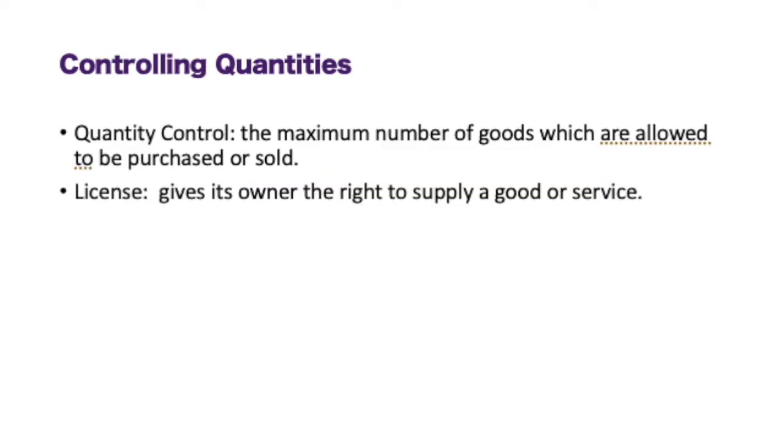So quantity controls, this is the maximum number of goods which are allowed to be purchased or sold. That's the government coming in, and now instead of looking at prices or dictating the price, they're dictating the quantity that can be sold. A good example of this is in New York City. There are only so many taxicab licenses in the market, and that number is controlled by the government.